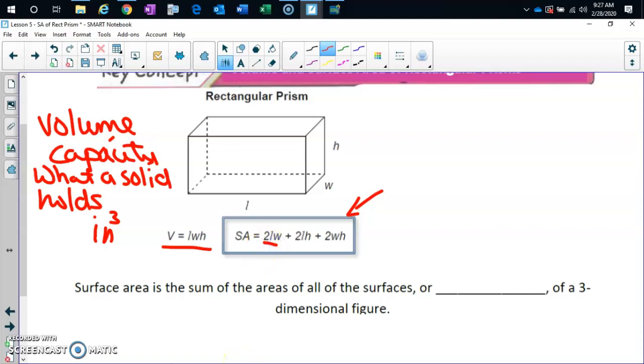Look, two length width. Isn't length and width this bottom and this top rectangles? There's two of them. Two length height. Length and height would be the front and the back. There's two of them. And width and height would be these two faces, or sides, whichever way you turn it. There are two of them. So a rectangular prism is made up of two, four, six rectangles, and that's what that formula is.